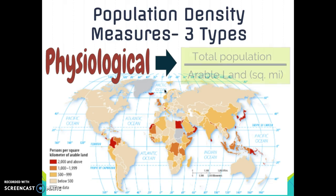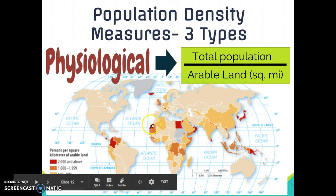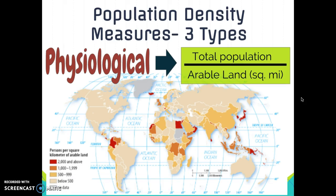Physiological density is the total population divided by the amount of arable land in a country. A high physiological density means greater pressure on the land to produce food. This is more useful for determining an area's carrying capacity — the population that can be supported by available resources. Countries like Egypt, South Korea, Japan, and Sri Lanka have the highest physiological densities, meaning the least arable land relative to their populations.